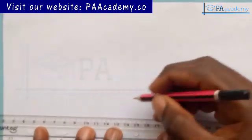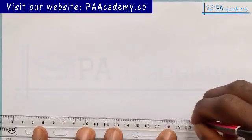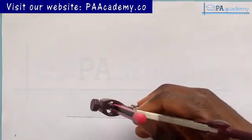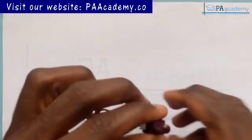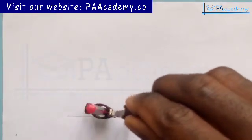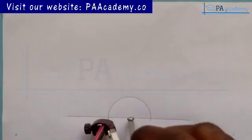To start with, bring in your ruler and draw your horizontal line. Then bring in your compass at any convenient length and draw the semicircle.